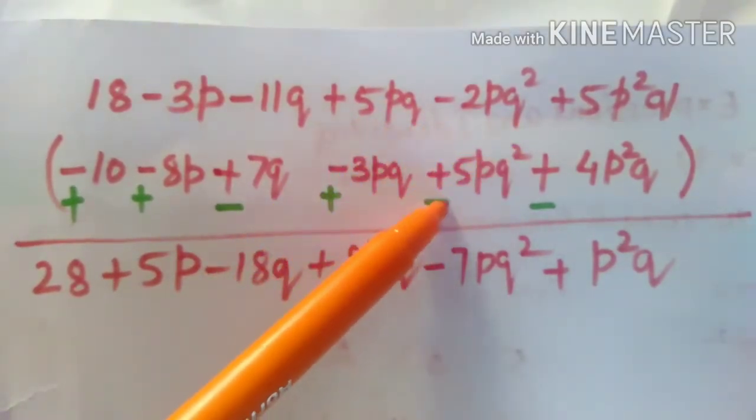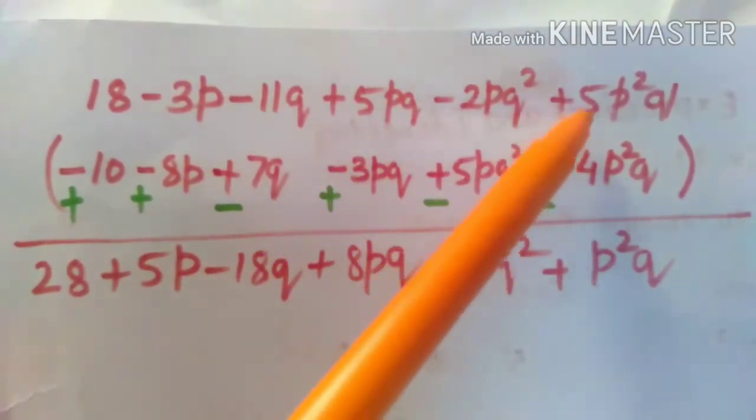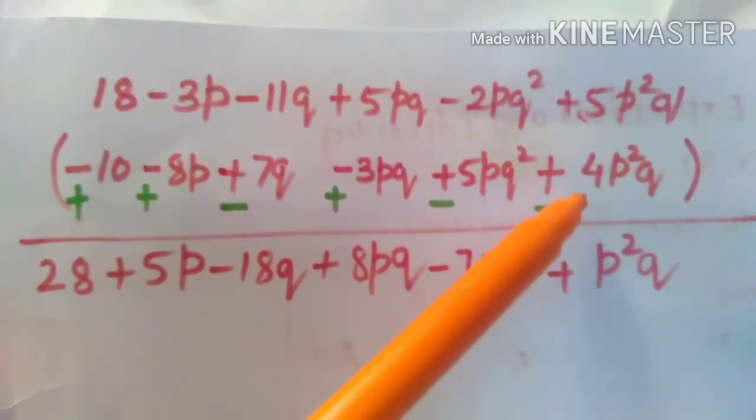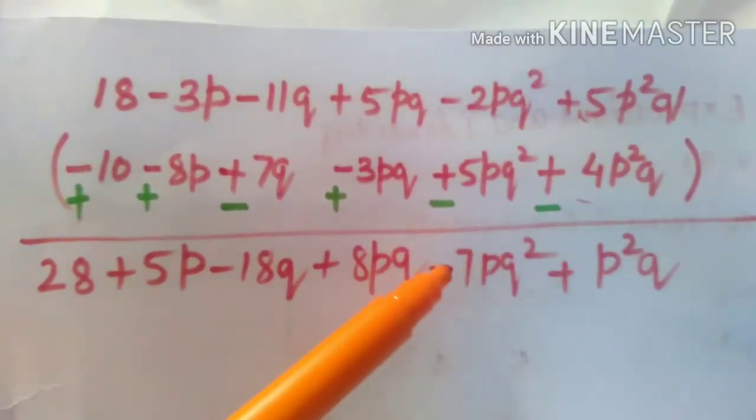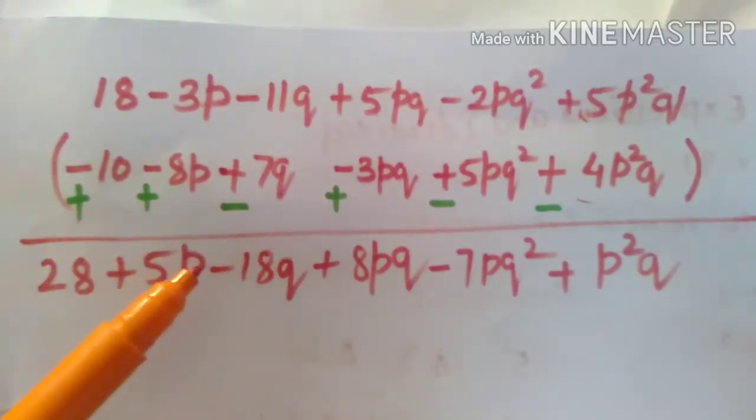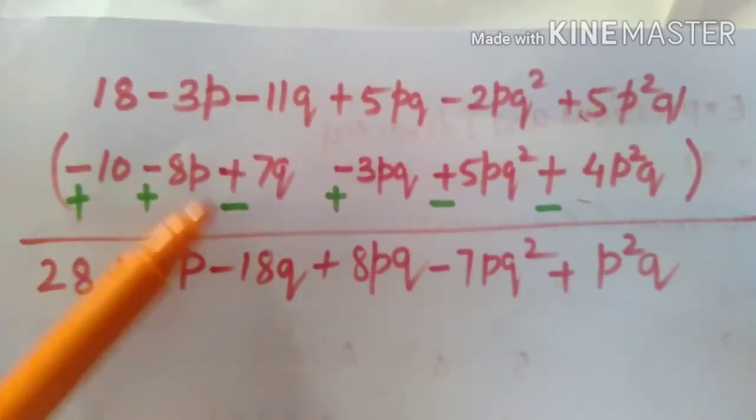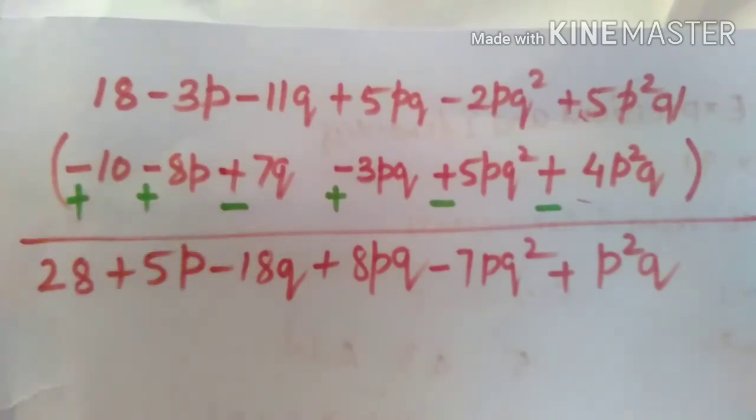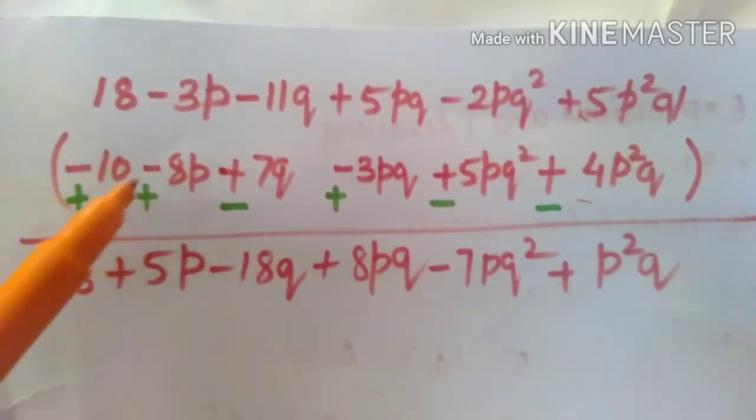minus 3PQ, minus 2PQ square plus 5P square Q plus 4P square Q. And then when we subtract, the plus sign changes into the minus sign. As I have changed with the green color, minus sign changes to plus sign and the plus sign changes to minus sign. Then we deal with that 18 plus 10, 28, minus 3P plus 8P,